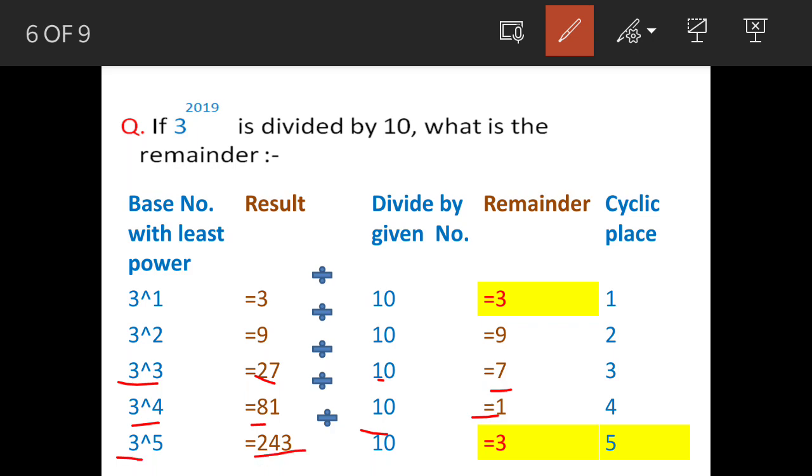3 to the power 5 is 243. When it is divided by 10 we are getting remainder 3, and here it has repeated itself. This is repeated after the 4th term.